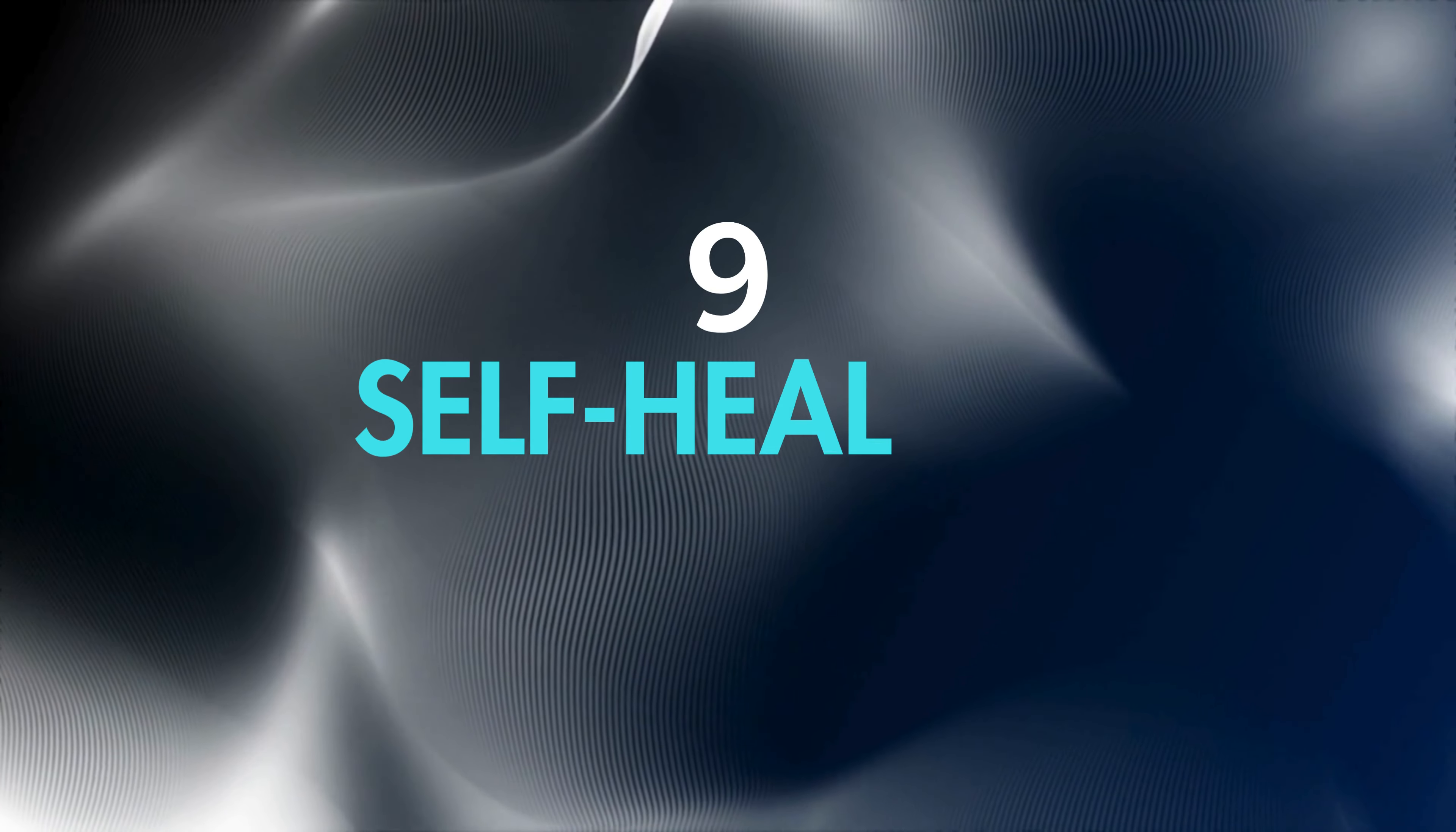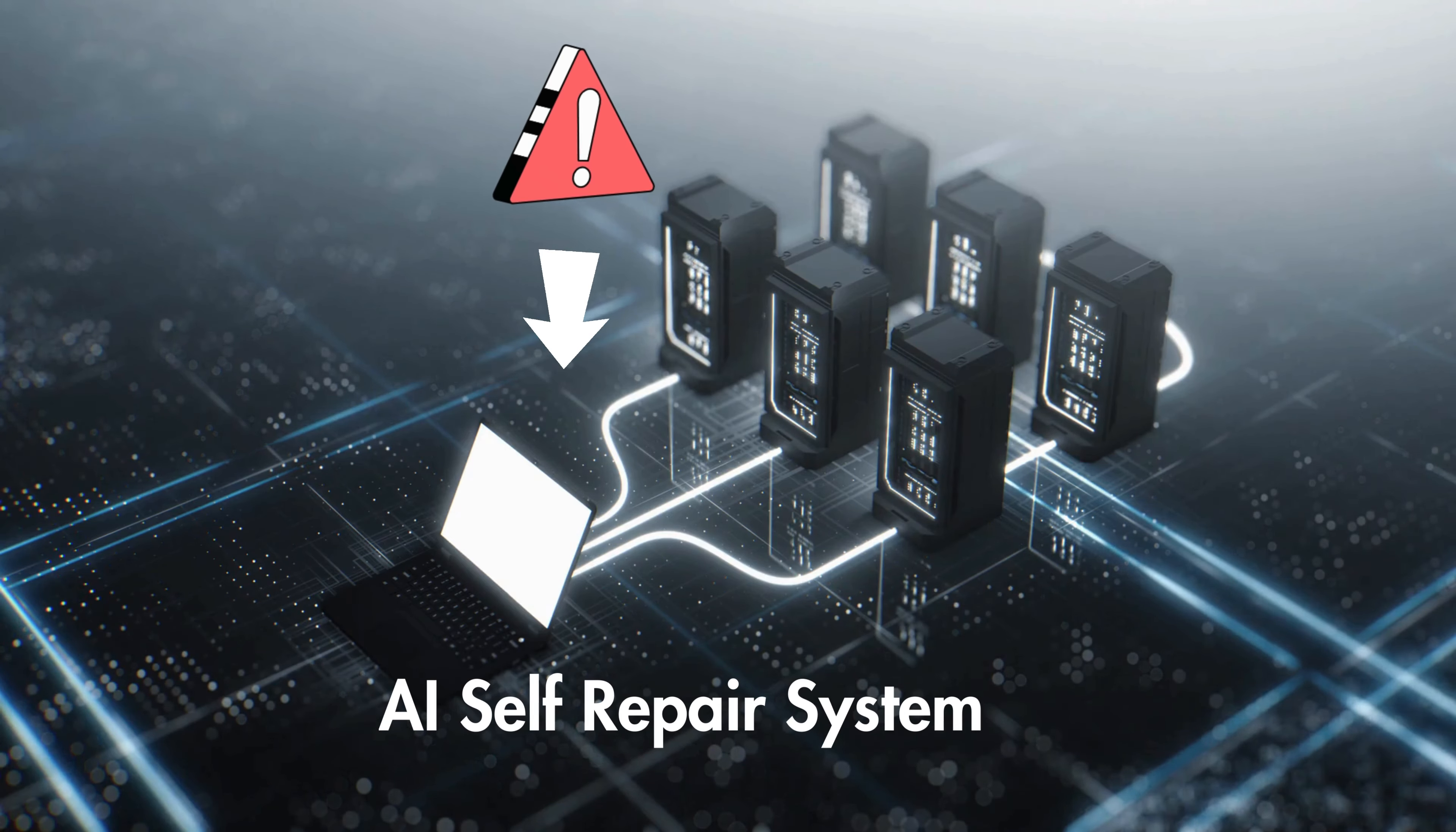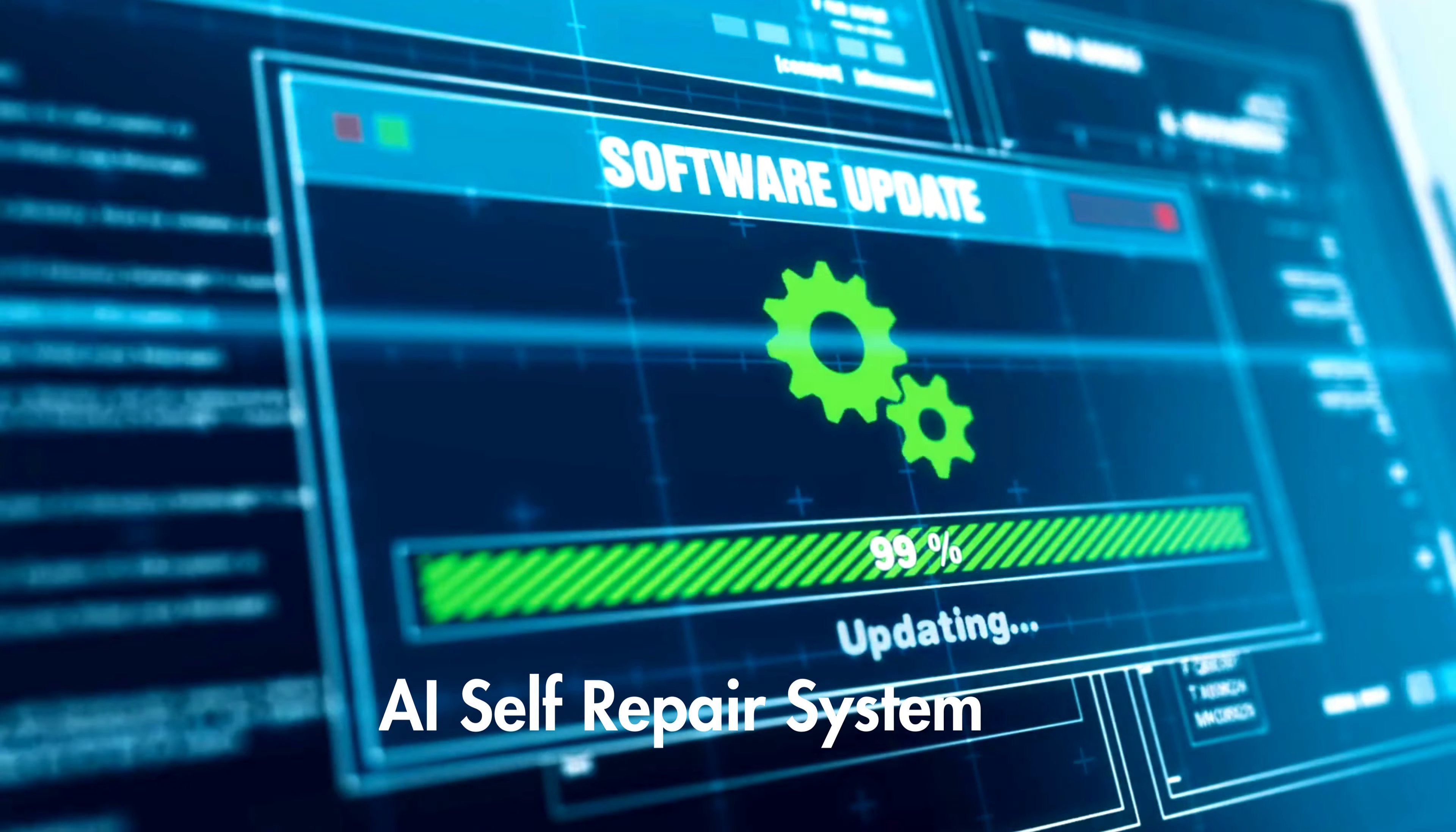Number 9: Self-Healing AI. AI systems will detect and fix errors autonomously, reducing downtime and improving reliability. Imagine AI repairing itself like the human body heals from injuries. Think of a computer fixing itself after a crash, preventing any loss of work.